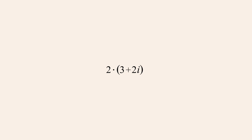We will start with a simple example: multiplying the complex number 3 plus 2i times 2. Since this complex number is a sum of two numbers, 3 and 2i, we can use the distributive property to multiply this sum times 2. 2 times 3 is 6, and 2 times 2i is 4i, resulting in the complex number 6 plus 4i.